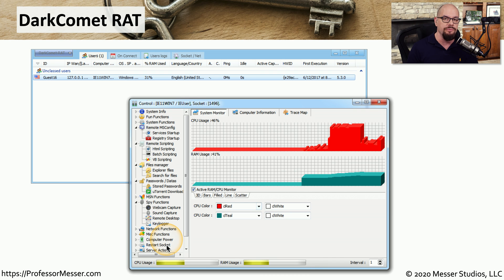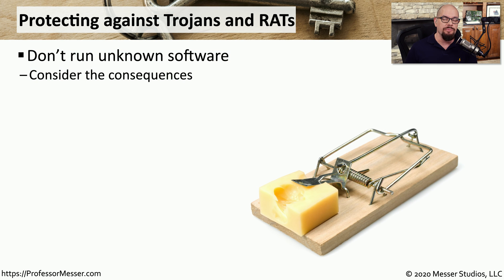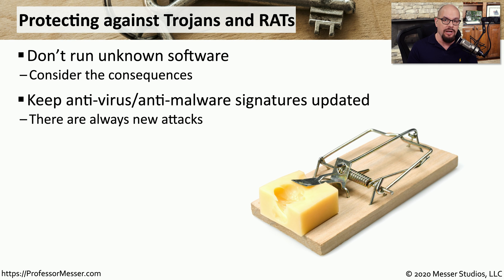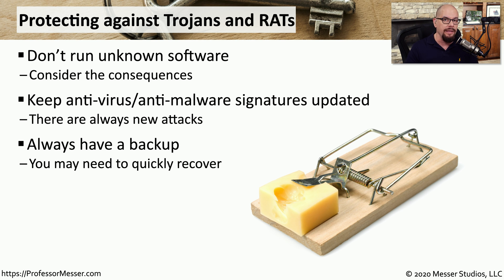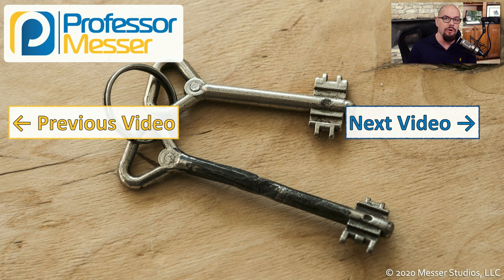The process of preventing a Trojan or RAT from running on your system is very similar to preventing any other type of malware. You don't want to click any unknown links or links inside of your emails. You always want to be sure that your antivirus software is running and that you have the latest signatures installed. It's always good to have a backup so that if a system does become infected and you're not able to remove that software, you can easily restore your system from a known good backup.